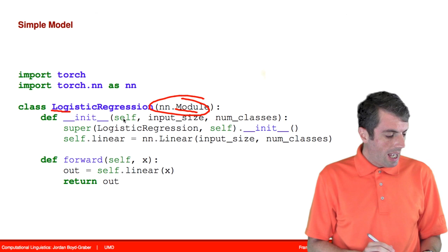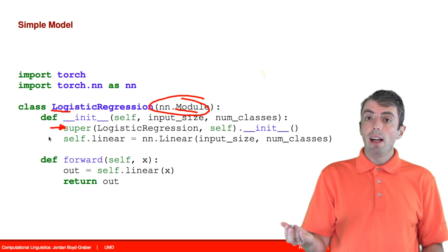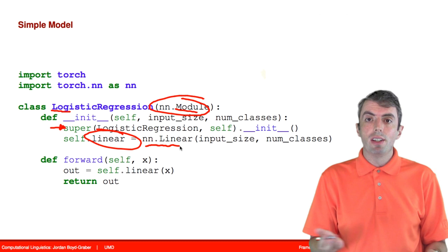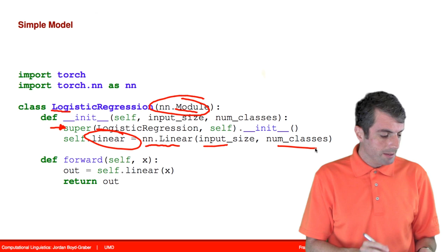And we will then initialize our class here. So this is just calling the constructor for the parent class. And then we're going to tell our model what its parameters are. In this case, we just have a single linear layer that is already defined. And we just need to tell it the size of the dimension that defines the linear transformation that we're going to be using. In this case, it's going to take in some number of features and output a distribution over some number of classes.